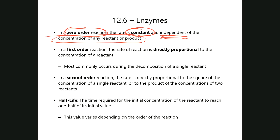In other transformations, not only the amount of enzyme matters, but also the amount of substrate. When the rate is directly proportional to how much substrate is present, that is a first-order reaction. As long as there's enough enzyme, the more substrate you have, the faster the reaction goes. Some transformations are not dependent on substrate at all — the only limiting factor is enzyme concentration.